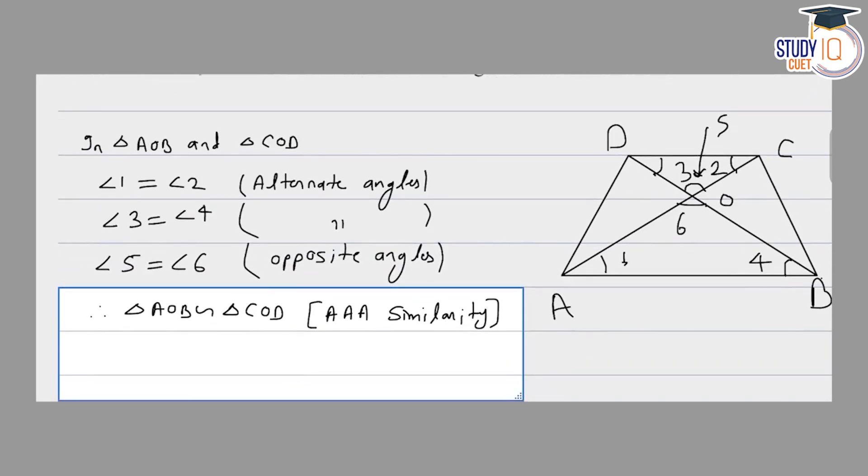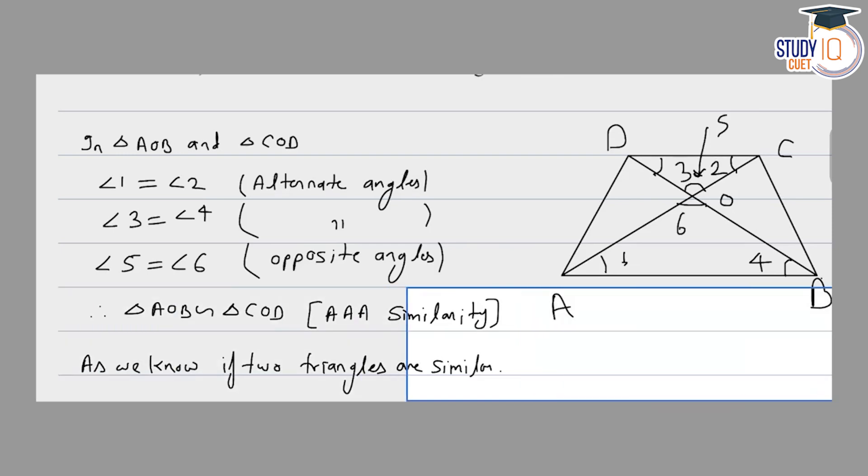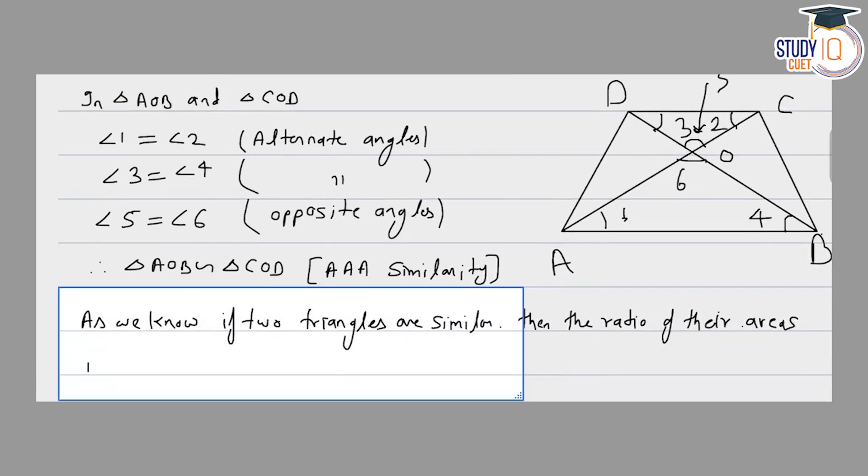As we know, if two triangles are similar, then the ratio of their areas are equal.